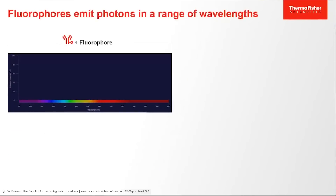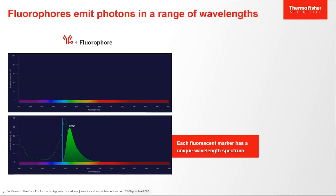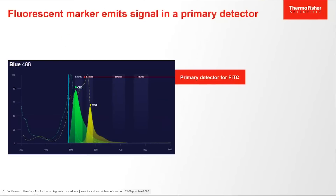Fluorophores emit photons in a range of wavelengths. Each fluorescent marker has a unique wavelength spectrum, as shown here with the FITC fluorescent marker. The spectra of the fluorescent marker determines the primary detector from where it will emit. For the CD3 FITC antibody, it is excited by the 488-nanometer laser and is collected by the 530-30 bandpass, as shown. Issues can arise with the tail end of the wavelength, which can overlap into a secondary detector, as shown with the CD4 PE antibody.